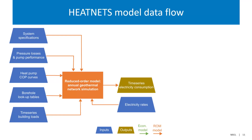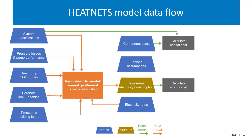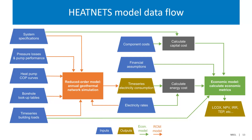To wrap up how the data flows together: the reduced order physics-based model takes in many different inputs and relies on high-level modeling done elsewhere. A major output is the time series electricity consumption. Additional inputs for the economic model include component cost estimates and financial assumptions, which feed into economic outputs like LCOx value, net present value, internal rate of return, and something we're calling thermal energy price.